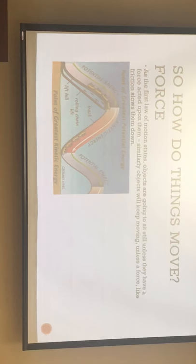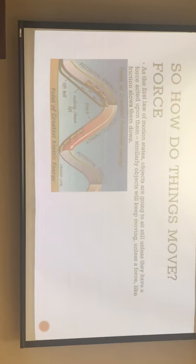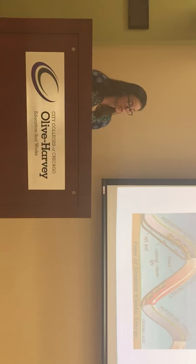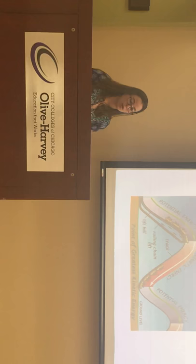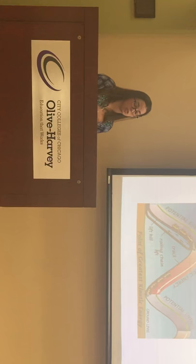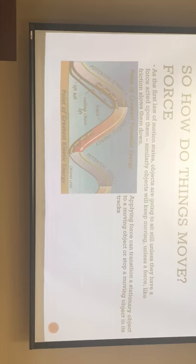How do things move? If an object at rest tends to stay at rest, that motion comes down to force. Objects will sit still unless a force acts upon them, and objects will keep moving unless a force like friction slows them down. A classic example is a roller coaster — a physical force like a chain brings it up, then gravity converts potential energy to kinetic energy, allowing the motion to continue. Applying force can transition a stationary object to a moving one, or stop a moving object.